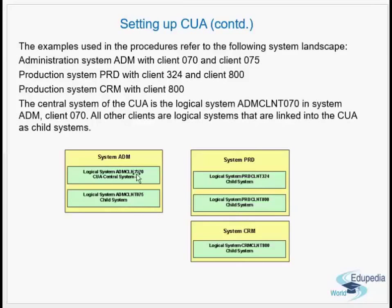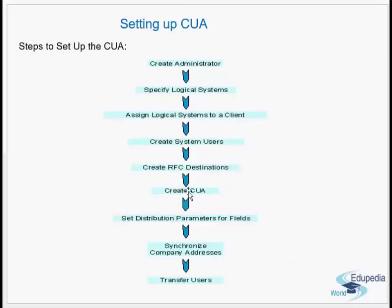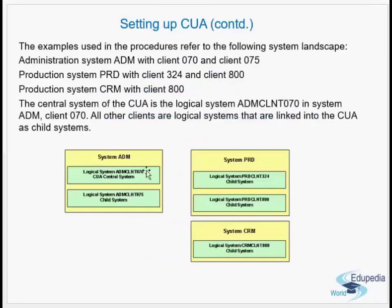Client 070 is linked with 075, and linked individually to the other three clients. All four child systems are not connected to each other. That is why creating logical systems is required — in the central system with N clients, only one client functions as the central user administrator. All other clients work as child systems. The central system is linked to each of these client and child systems, and the child systems are not connected to each other.